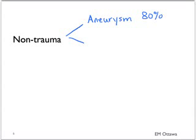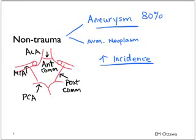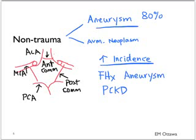For non-traumatic causes of subarachnoid hemorrhage, most will be due to rupture of an aneurysm. Minor causes include ruptured AVM and neoplasms. We will therefore focus on aneurysmal subarachnoid hemorrhage. Aneurysms are most often found in the circle of Willis, formed by the anterior cerebral arteries, middle cerebral arteries, posterior cerebral arteries, and the communicating arteries. The incidence of aneurysm increases with family history of aneurysms. Associated diseases include polycystic kidney disease and connective tissue diseases such as Marfan's and Ehlers-Danlos Syndrome.